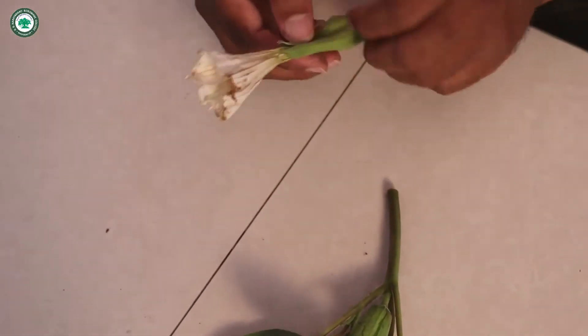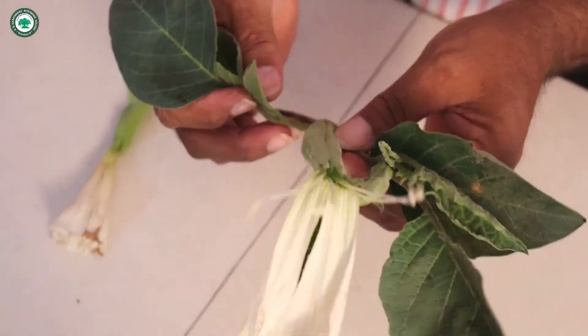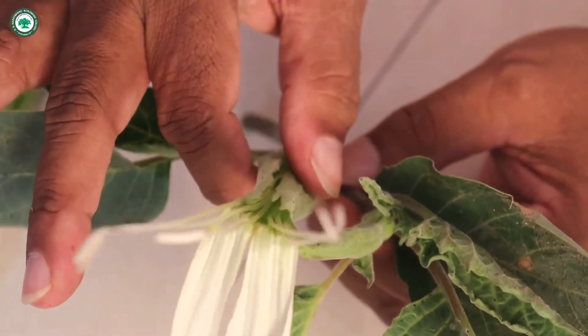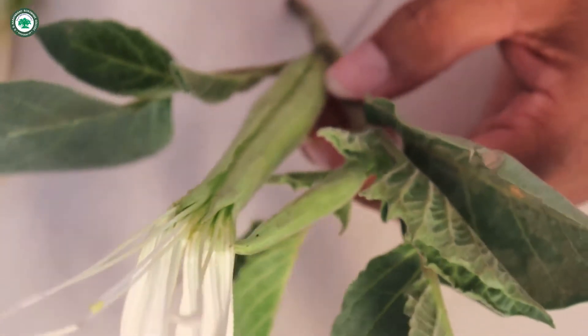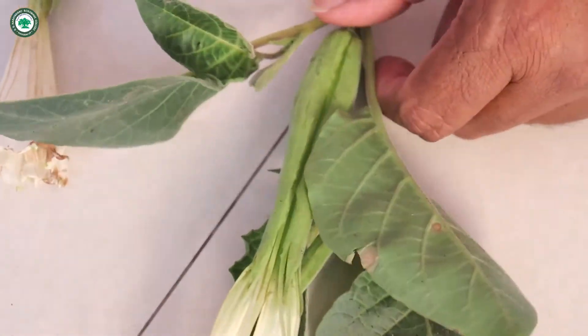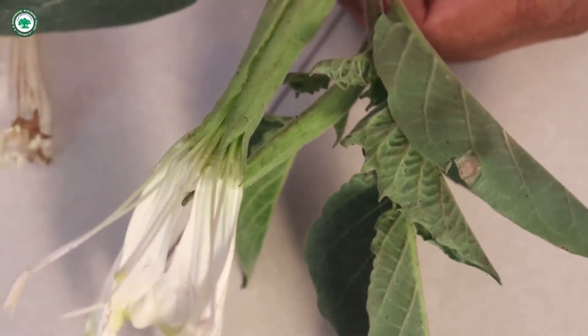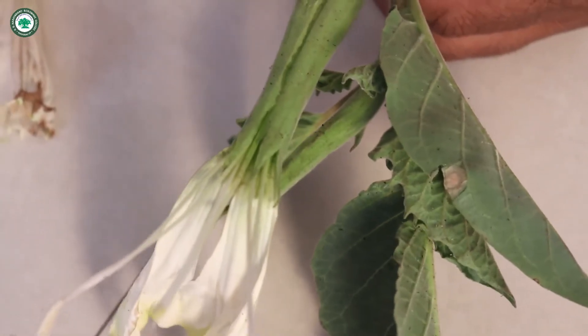Now the flowering characters. Now the inflorescence, it is a solitary axillary because it is developed in the axil of the leaf and it is one flower only. So it is called as the solitary axillary. Then flower, now this flower is ebracteate because there is no bract. So it is called as the ebracteate, pedicellate, it has a short stalk so called as the pedicellate.